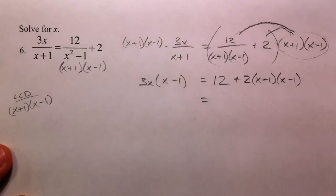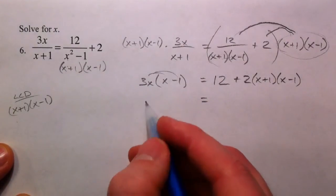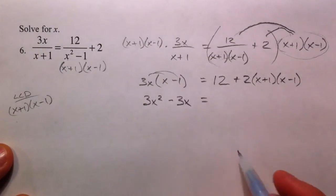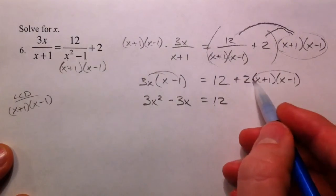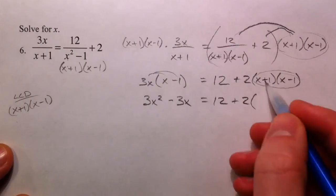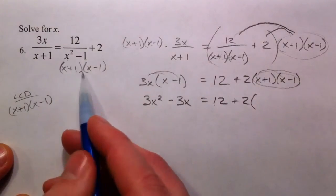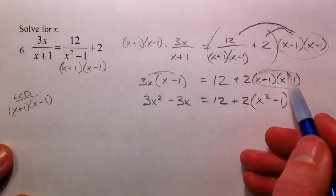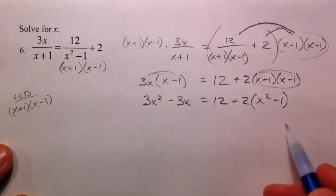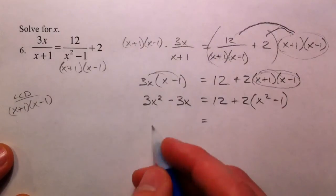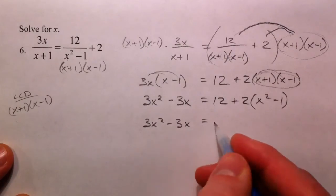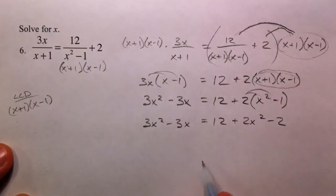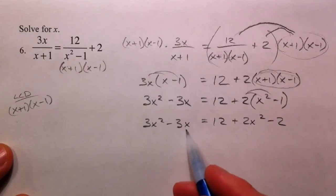Now we just need to simplify. 3x times x is 3x squared, and 3x times negative 1 is negative 3x. Then we get 12. Multiplying x plus 1 times x minus 1 gives x squared minus 1 — the middle terms drop out every time, since x squared minus x plus x cancels, and 1 times negative 1 is just negative 1. So we have plus 2x squared minus 2.